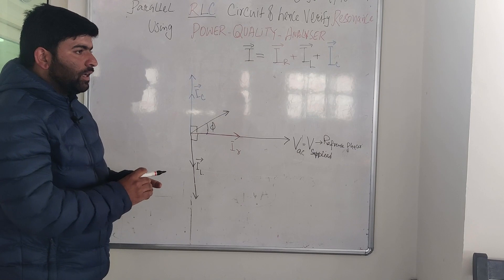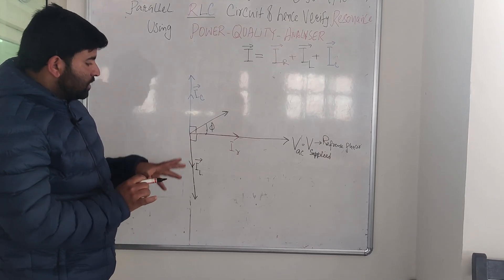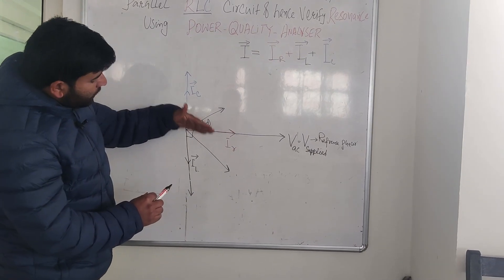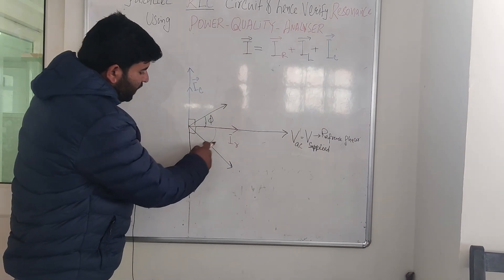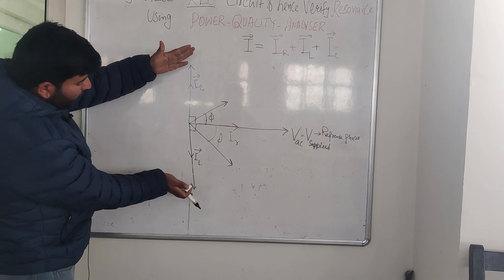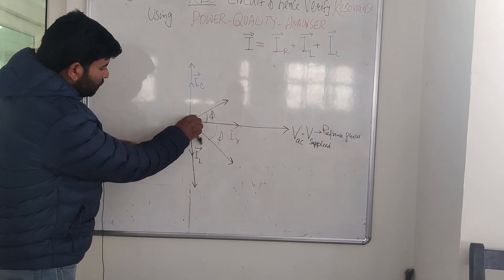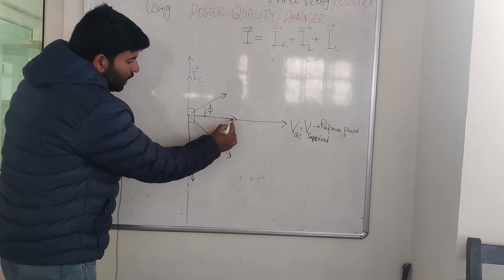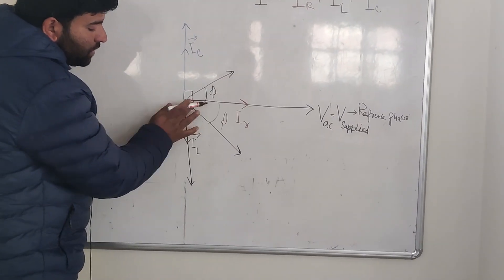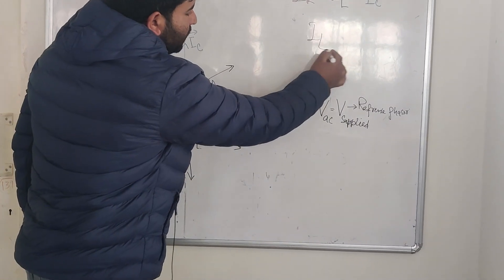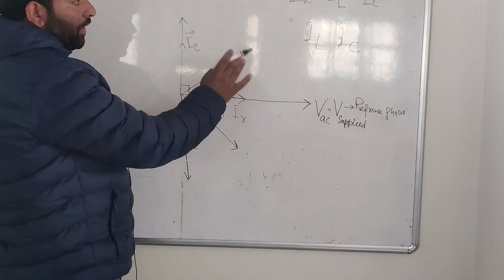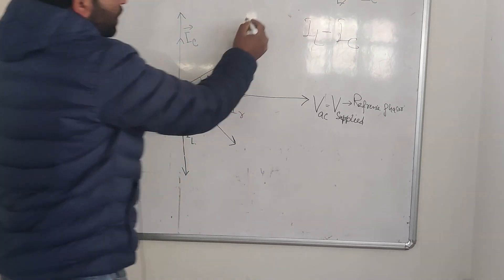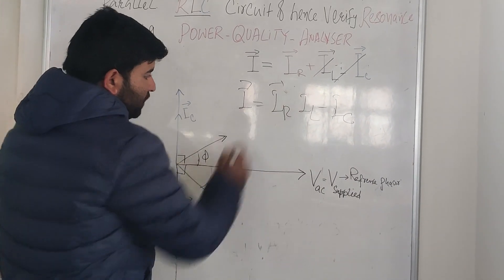Since L and C are variable, we can interchange their values. If inductance dominates over capacitance, the input current will be lagging. The locus of the current changes from leading to lagging position depending on the values of L and C. When the current locus crosses the voltage phasor, current and voltage are in phase — that is resonance. At that point, IL and IC cancel each other out, and the input current equals only the resistive current IR.